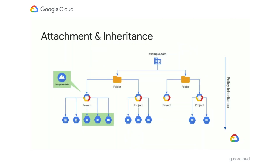Because projects usually end up being a logical grouping of resources that represent a particular workload, they're a frequent attachment point for IAM policies to keep the effect of those policies scoped to just that workload. However, for many resource types, it is possible to set the policy even lower. You could, for example, grant a user access just to a single VM in a project rather than all of them.